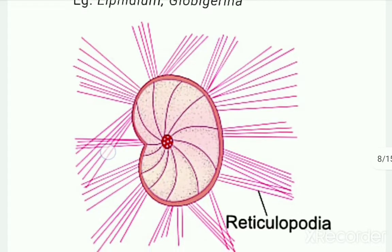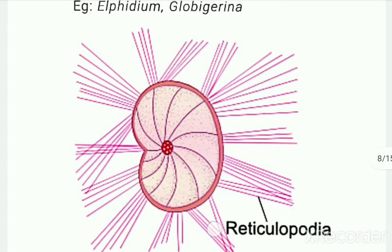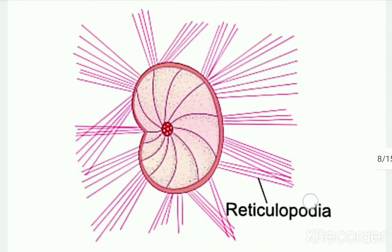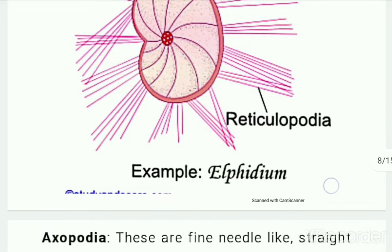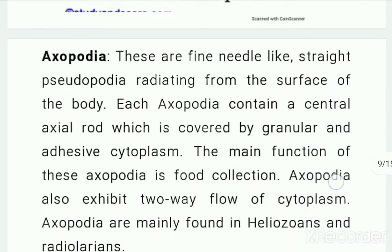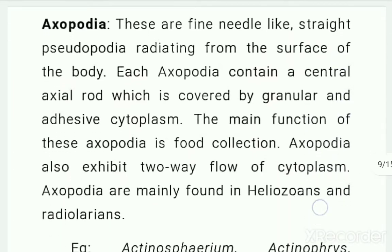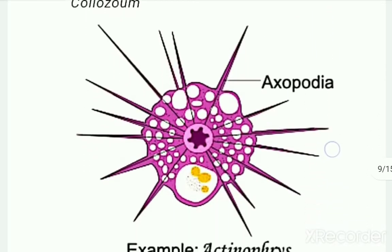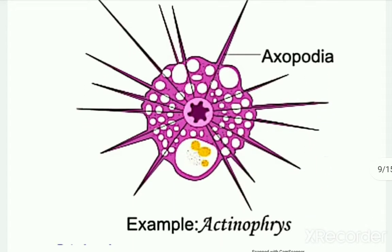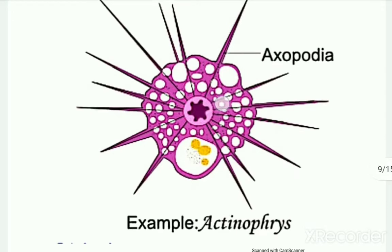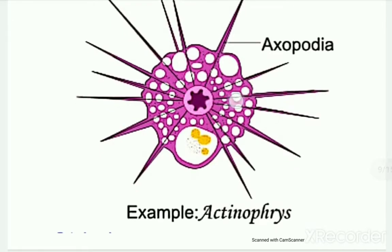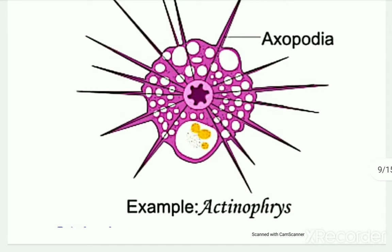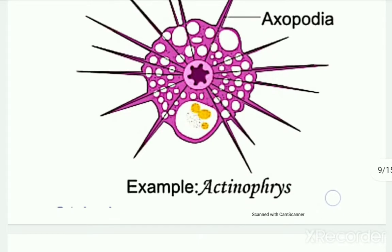Last are the axopodia, which are needle-like pseudopodia. The main characteristic feature of axopodia is that each pseudopodium is stabilized by a very fine axial filament present inside. These are the different types of pseudopodia present in case of protozoans.